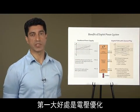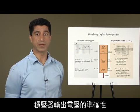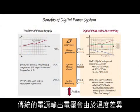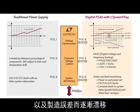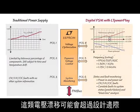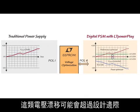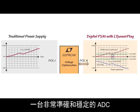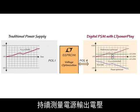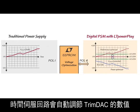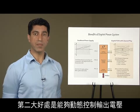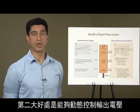With Linear Technology's PSM products, you can take control of your system's power. The first benefit is voltage optimization. Output voltage accuracy of a regulator is critical in powering ASICs and FPGAs. The traditional power supply's output voltage drifts with time due to temperature variations and manufacturing tolerances. A digitally managed supply constantly measures the power supply output voltage with a very accurate and stable analog-to-digital converter, and a time-server loop automatically adjusts the value of a trim DAC, canceling the output voltage drift and greatly improving precision.